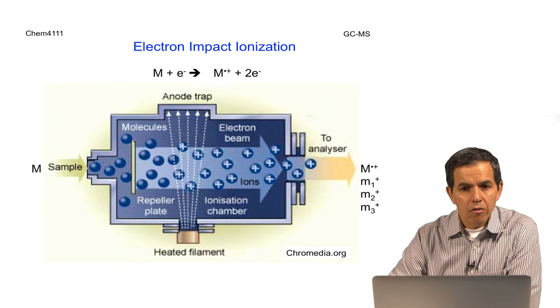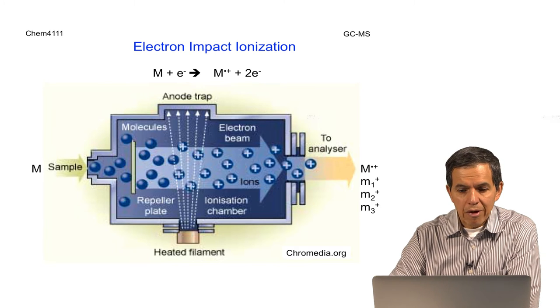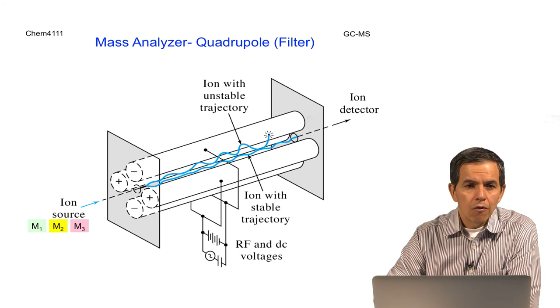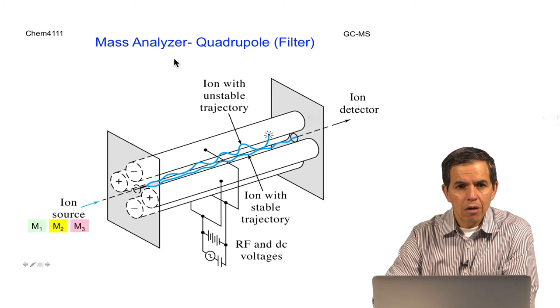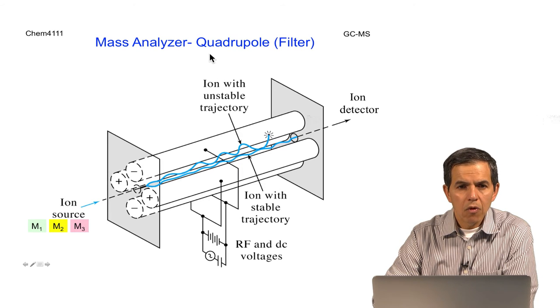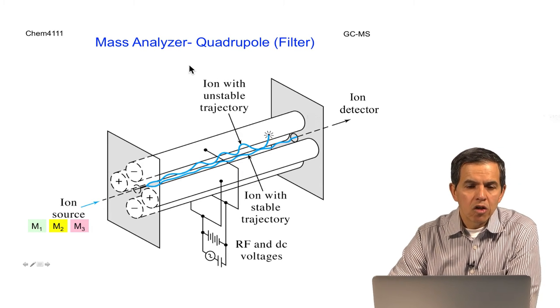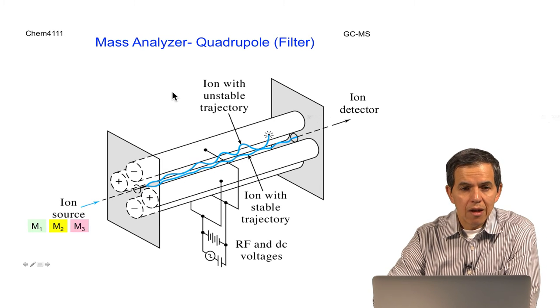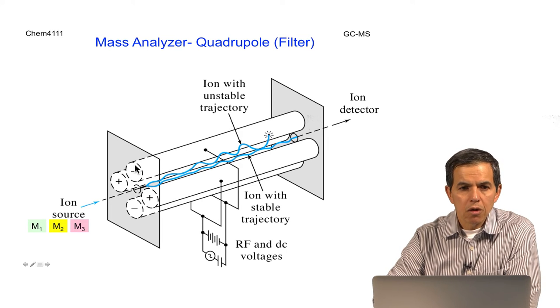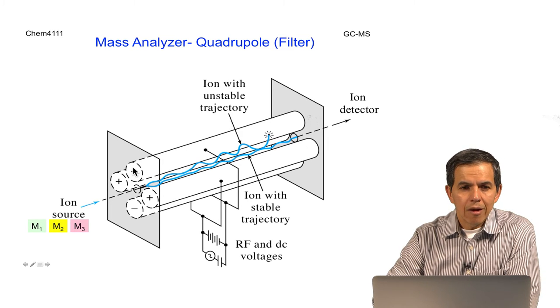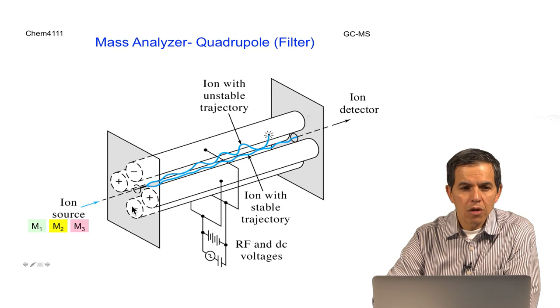The second component corresponds to the separation and sorting of ions. For that, the instrument component is called a mass analyzer. In this particular experiment, it is a quadrupole, which works as a filter for ions. Here we have four poles. The ones that are opposite to each other have the same charge, like minus and minus. Adjacent poles have the same magnitude but opposite sign.